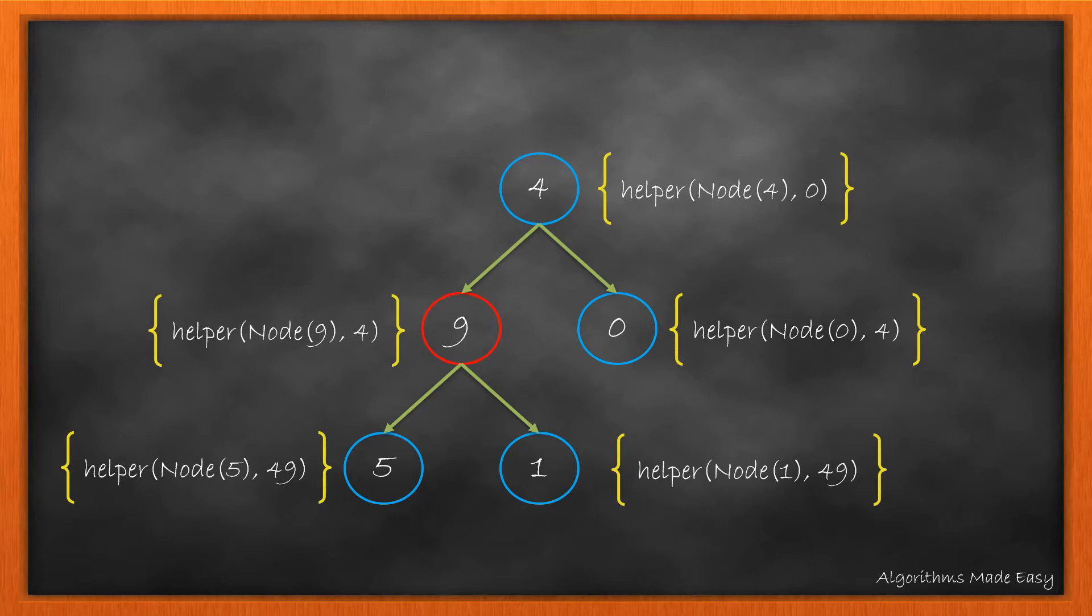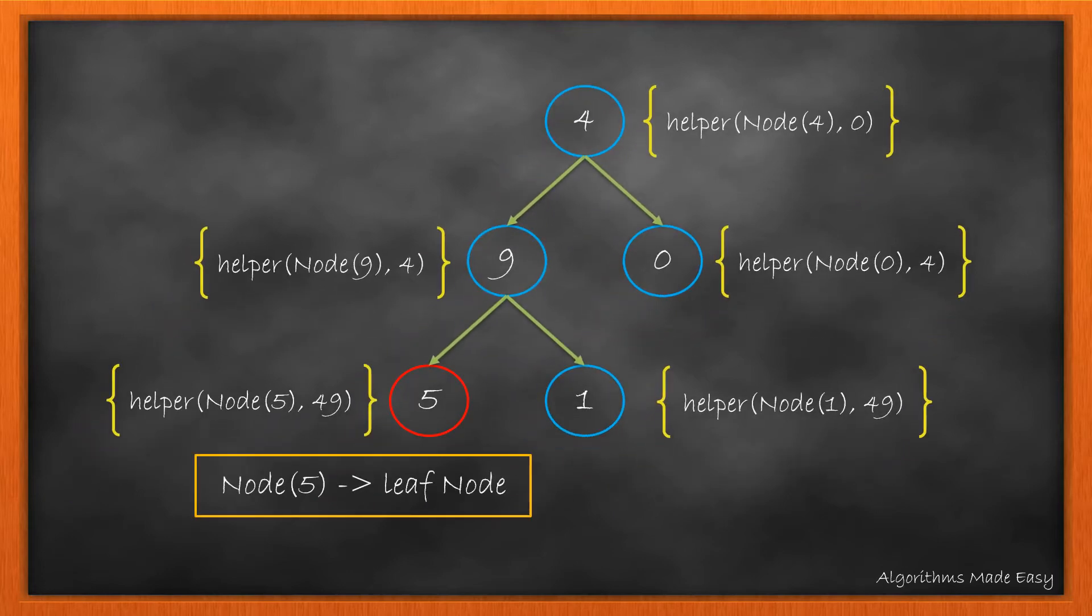Similar to previous, we call the method for left and right subtree of node 9. Now, as we have reached the leaf node, we have come to what will become our exit condition. When at leaf node, we would return temp sum by 10 plus the current node value. In this case, 495.